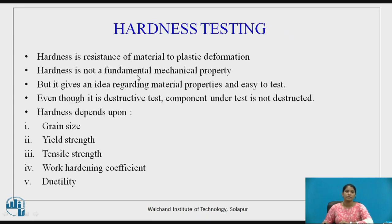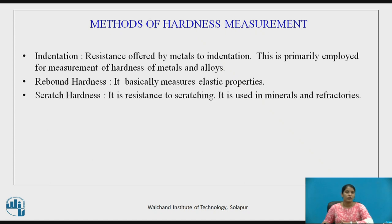What is hardness? Hardness is the resistance of a material to plastic deformation. It is a fundamental mechanical property. Hardness depends upon grain size, yield strength, tensile strength, work hardening coefficient, and ductility. There are three types of hardness: indentation hardness, which depends on the resistance offered by metals to indentation; rebound hardness test; and scratch hardness test.